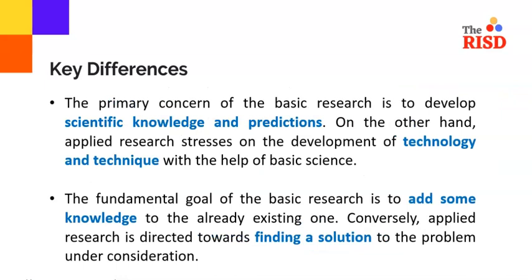The primary concern of basic research is to develop scientific knowledge and predictions. On the other hand, applied research stresses the development of technology and technique with the help of basic science. So both research types reinforce each other for a conclusion. The fundamental goal of basic research is to add knowledge to the already existing one, while applied research is directed towards finding a solution to the problem under consideration.